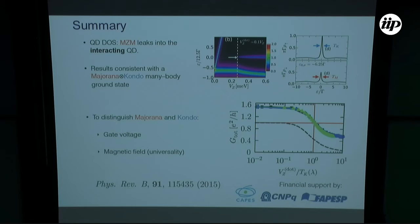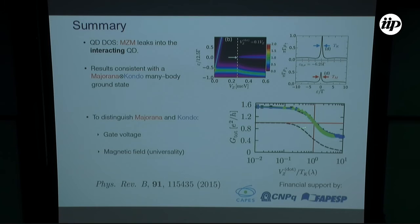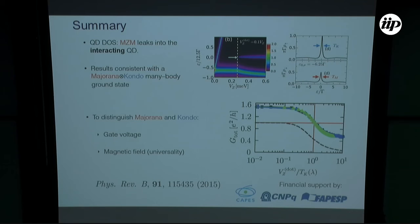In summary: there is interesting physics here that can be understood in terms of an overscreened two-channel Kondo description in terms of Majorana fermions, which is still a non-Fermi liquid. One of the signatures is the half-quantum conductance. The other key point is that we can use the quantum dot as a tool — intentionally placed — to get a signature of whether a Majorana mode is present or not. Also noteworthy is that an Andreev bound state would not tunnel into the dot as easily as a Majorana one, so that could be another discriminating feature.